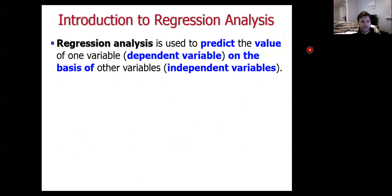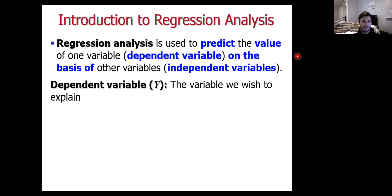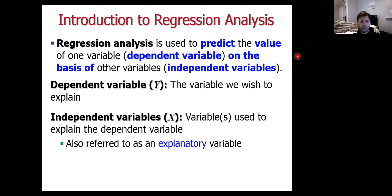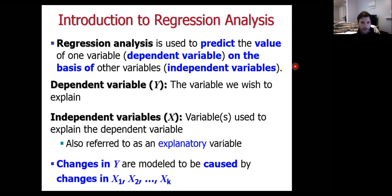Regression analysis is used to predict the value of one variable — referred to as the dependent variable or the predicted variable — based on other variables on the right-hand side of the regression equation, called independent variables. The dependent variable is conventionally Y, and the independent variables are the explanatory variables, also called control variables or regressors. There is a causal relationship implied by theory when we build a regression model that is not there when we just look at a correlation coefficient.